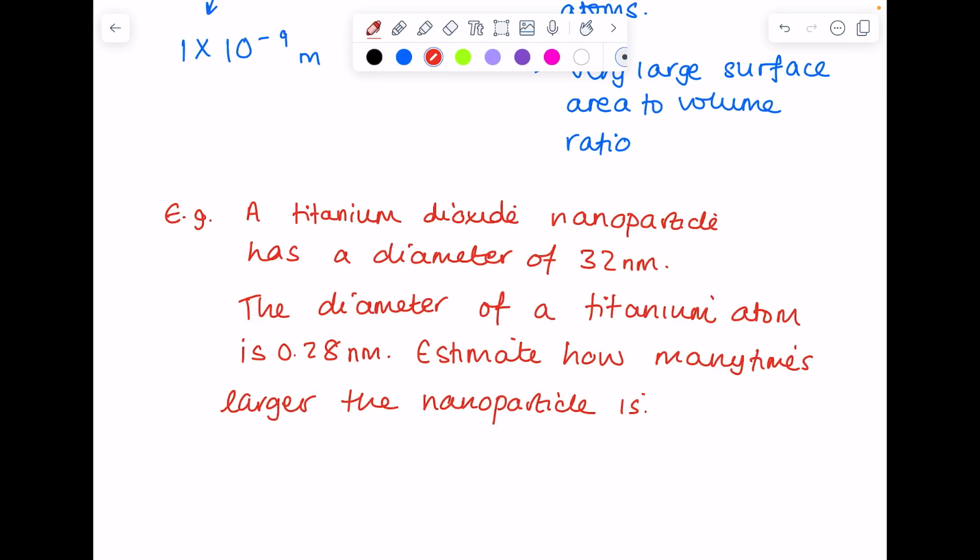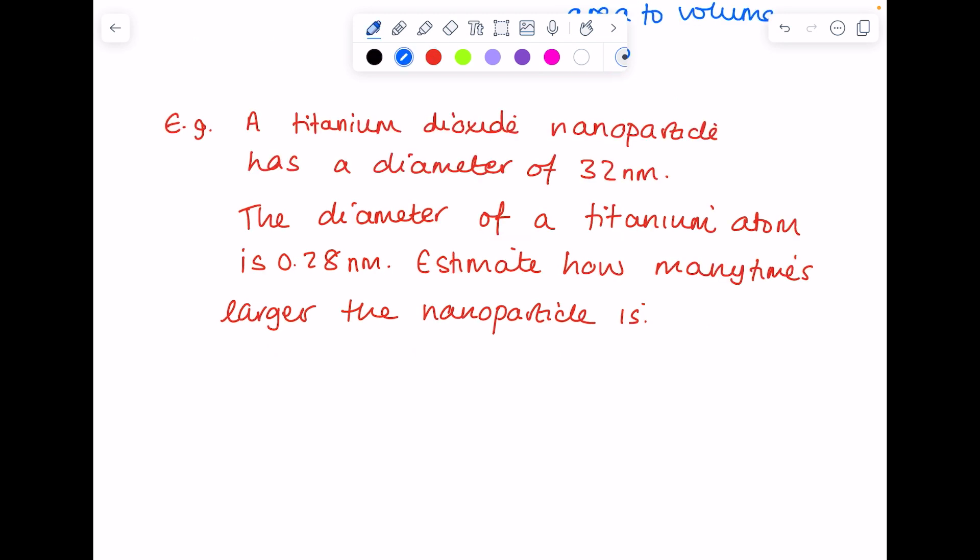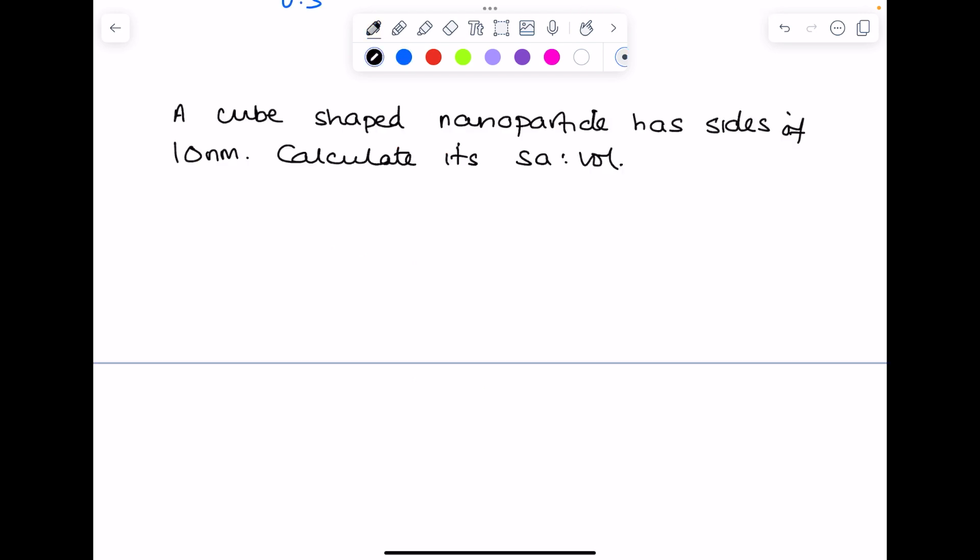So here's an example of a maths question they could ask you. A titanium dioxide nanoparticle has a diameter of 32 nanometers. The diameter of a titanium atom is 0.28 nanometers. Estimate how many times larger the nanoparticle is. Because it's just an estimate, let's quickly round those numbers. I'm going to round 32 nanometers to 30, and I'm going to round 0.28 nanometers to 0.3. So you can see that the nanoparticle is approximately 100 times larger than the titanium atom.